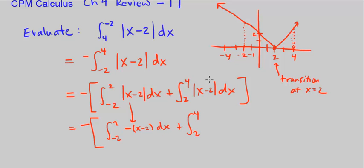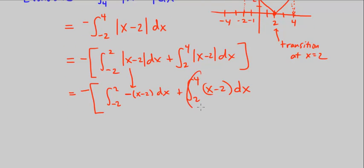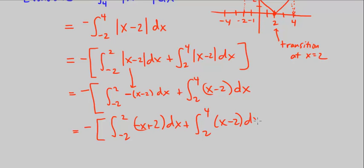Likewise, I know here above 2, where x is greater than 2, x minus 2 is already, as is, without the absolute value, positive. So I could just take away the absolute value when we're looking at the region above 2. So I still have negative here, and then I have the integral from negative 2 to 2 of negative x, I'm distributing the negative, plus 2 dx, plus the integral from 2 to 4 of x minus 2 dx.